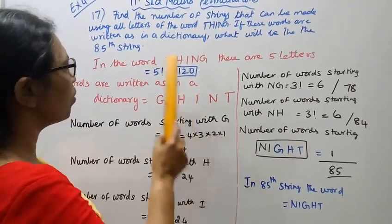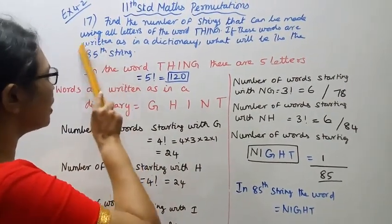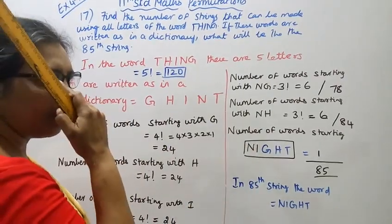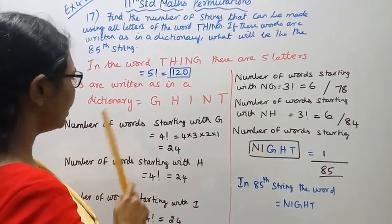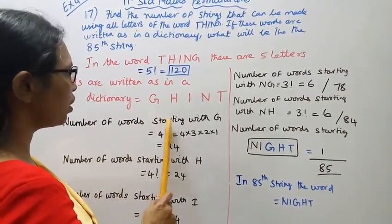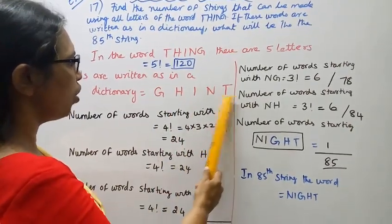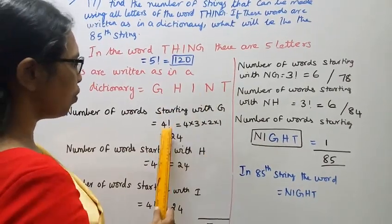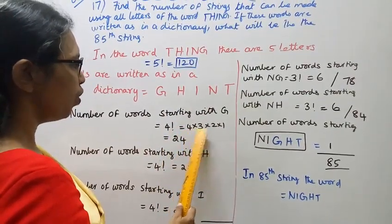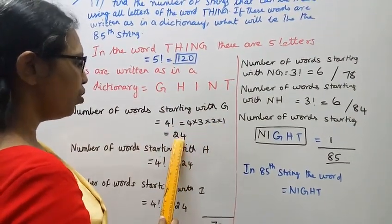Now, if we take the word starting with G, then 4 factorial, 4 into 3 into 2 into 1 equals 24.